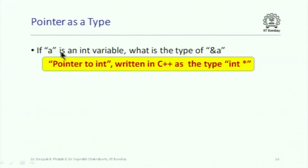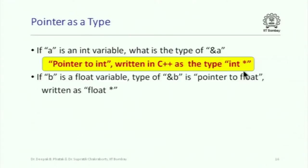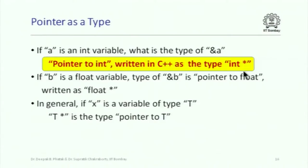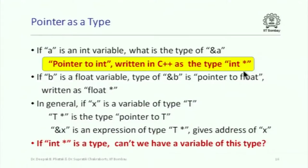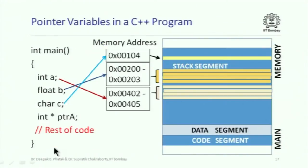If A is an integer variable, &A is an expression. Every expression in C++ has a type — the type of &A is called 'pointer to integer,' written as int* in C++. Similarly, if B is a float variable, &B has type float* (pointer to float). In general, if X is a variable of type T, then &X denotes the address of X and has type T* (pointer to T). Since pointer types exist, we should also be able to declare variables of those types, and indeed we can.